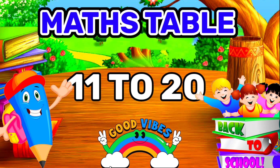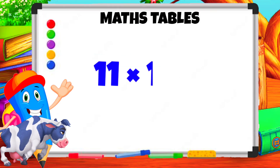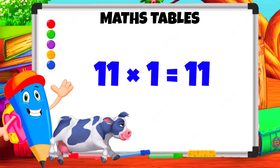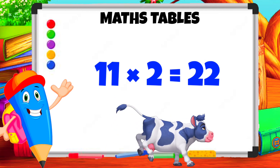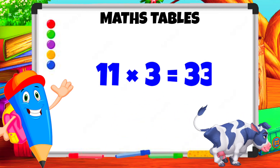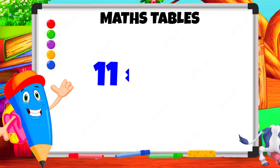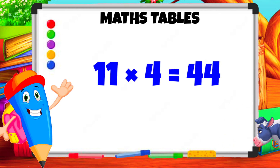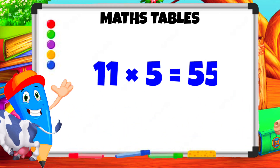Table of 11. 11 1s are 11. 11 2s are 22. 11 3s are 33. 11 4s are 44. 11 5s are 55.